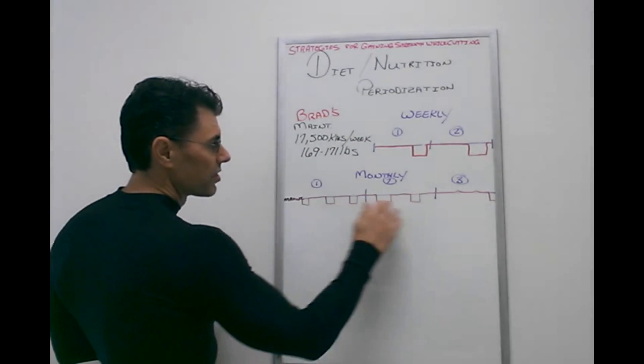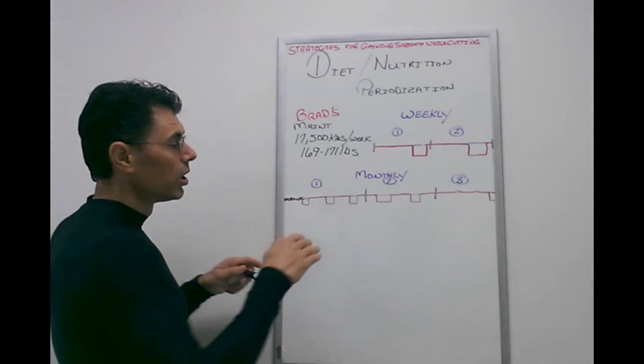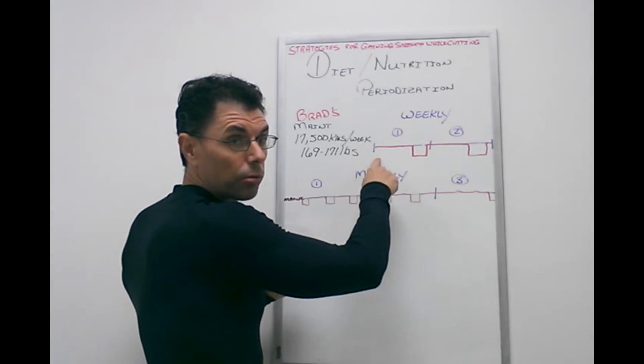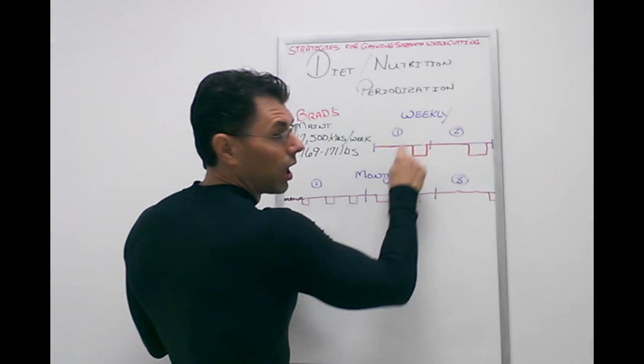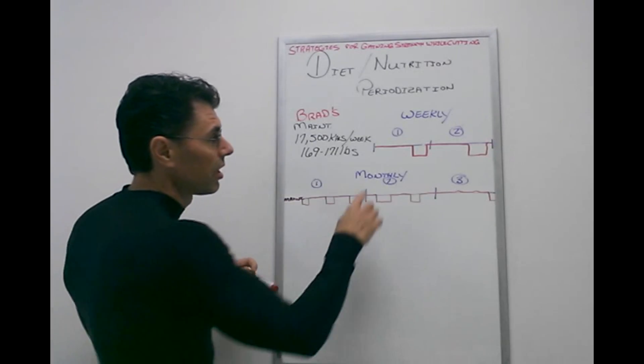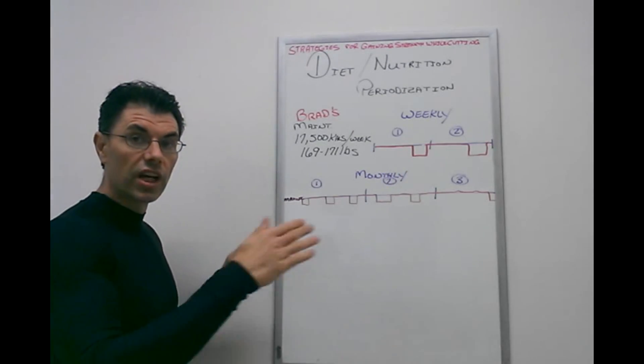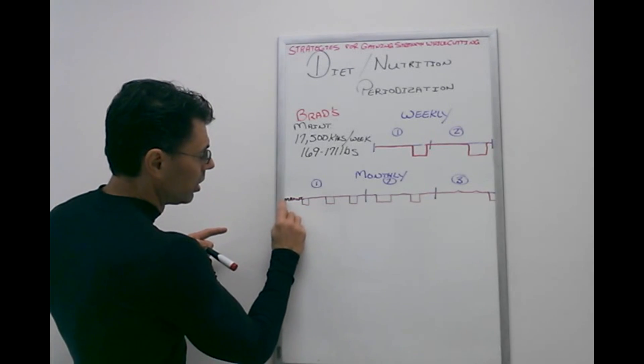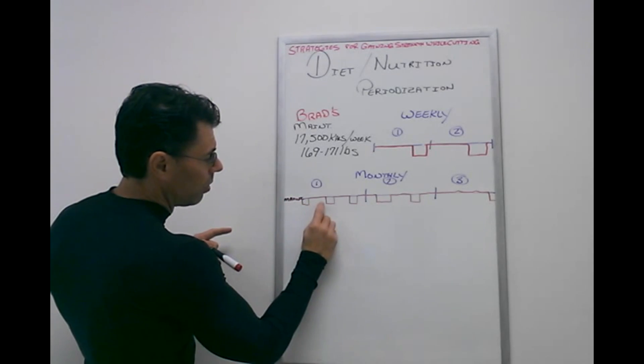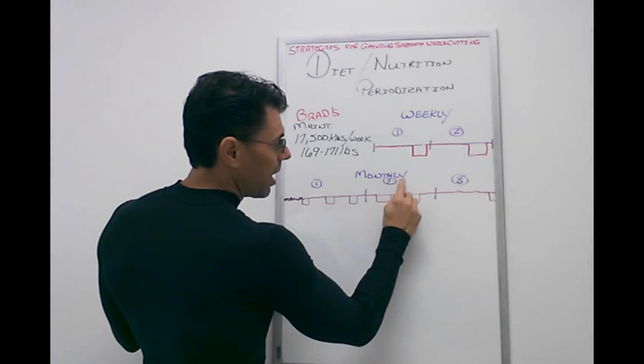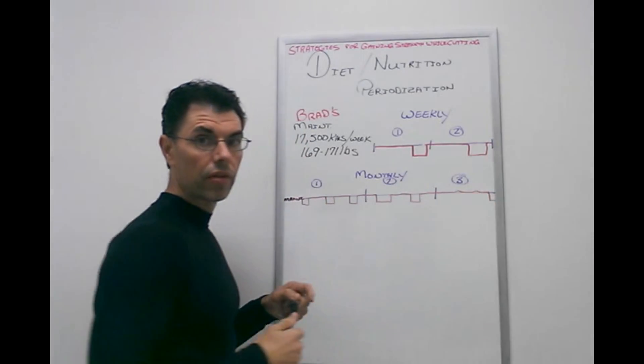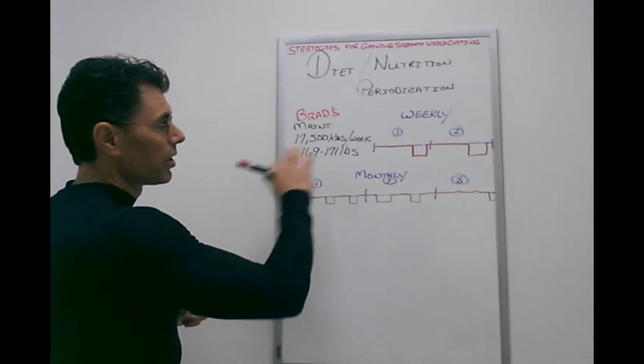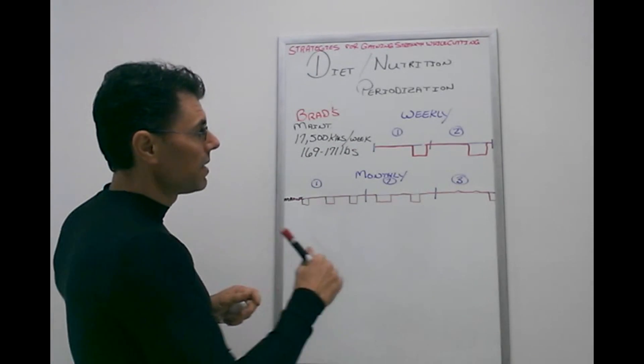So this, just like we periodize our training to where we might do heavy loads at the beginning of the week, low volume, and then switch it and go higher volume, lower loads, it's kind of the same thing. We're getting higher macros and lower macros. And then just like we run blocks of training in our meso cycles where we do high and low and high and low weekly, we might just stay up high and low for an entire month - monthly periodization.